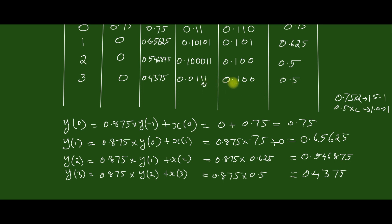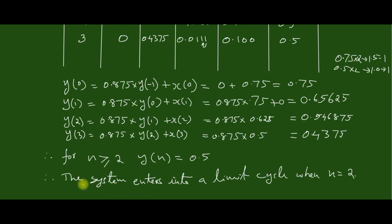When n = 2, the output enters into a limit cycle. Therefore, the system enters into a limit cycle when n = 2. So this is the final answer.